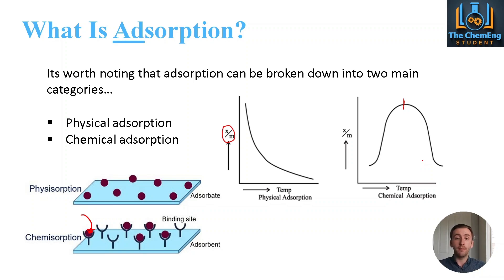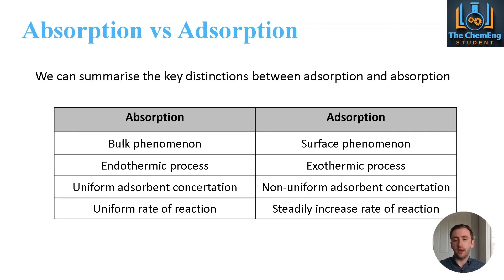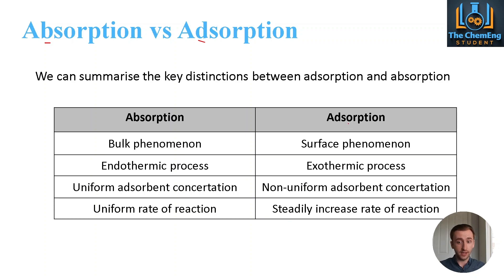There's a link in the description to those resources. To summarize the key distinctions between the two systems: absorption is a bulk phenomenon whereas adsorption is only on the surface; absorption is endothermic while adsorption is exothermic; adsorption has a non-uniform adsorbent concentration whereas absorption has a uniform concentration; and absorption has a uniform rate of reaction while adsorption has a steadily increasing rate of reaction. One enters the material, the other adheres only to the surface.